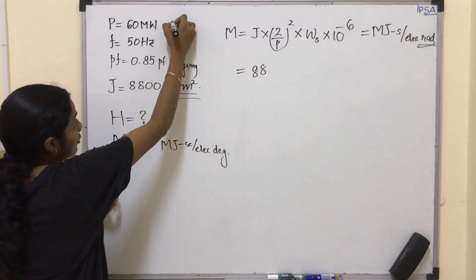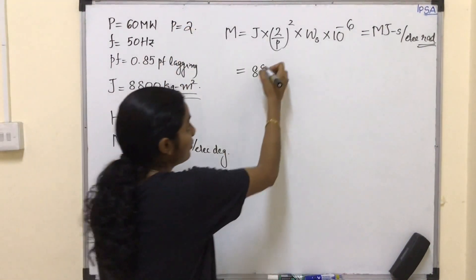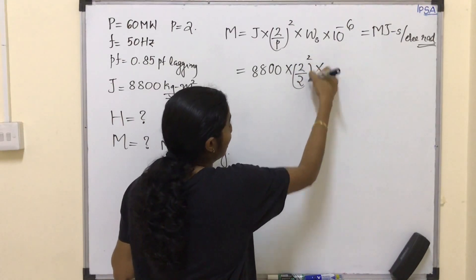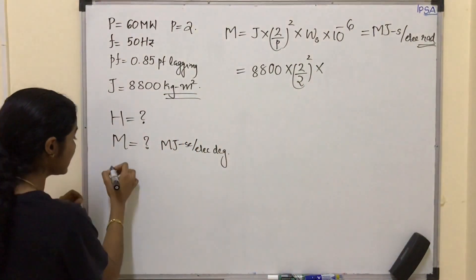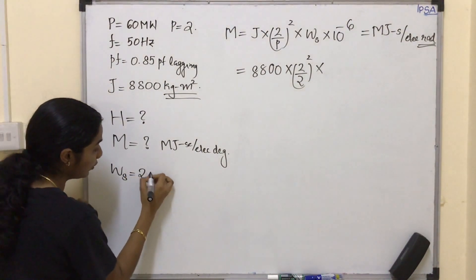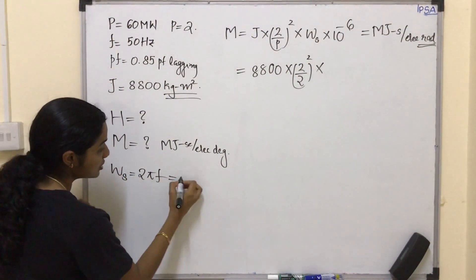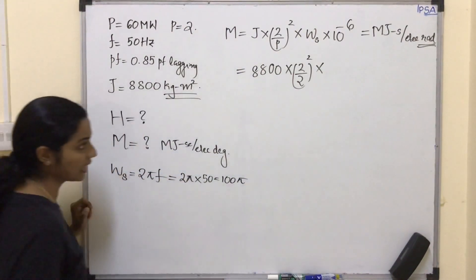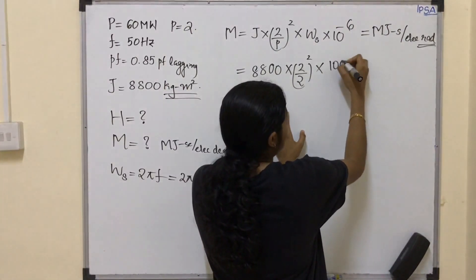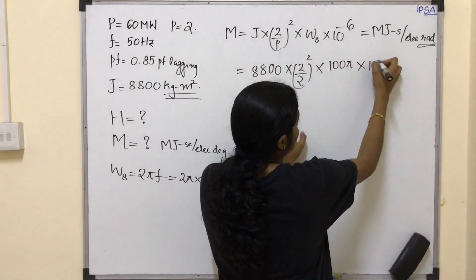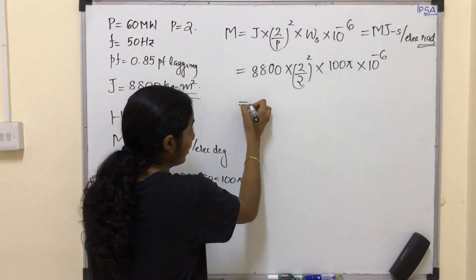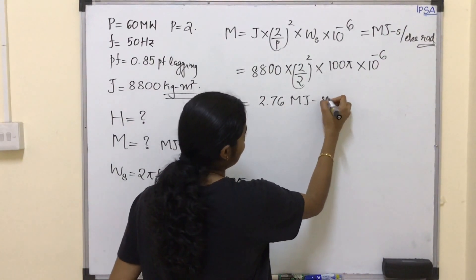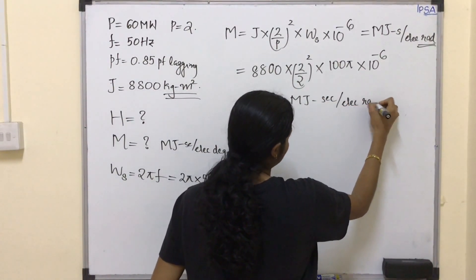P is equal to 2. So substituting: 8800 multiplied by (2/2)² into ωs. Since ωs equals 2πf, that is 2π into 50, which equals 100π. Substituting 100π multiplied by 10⁻⁶, we get M equal to 2.76 MJ·s per electrical radian.